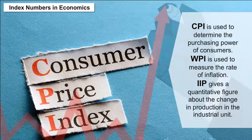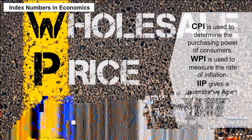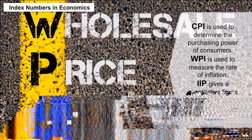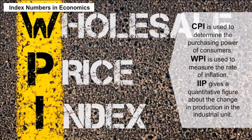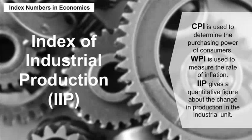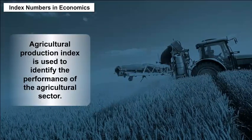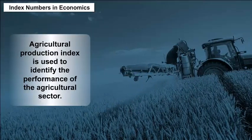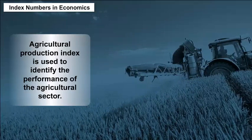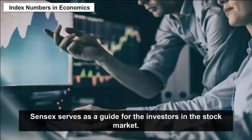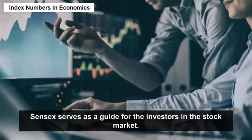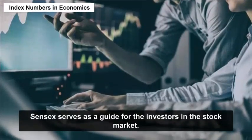Index numbers are a useful way of demonstrating data easily, and they make comparisons easier. The base value always has an index number of 100. CPI is used to determine the purchasing power of consumers. WPI is used to measure the rate of inflation. IIP gives a quantitative figure about the change in production in industrial units. Agricultural Production Index is used to identify the performance of the agricultural sector, and Sensex serves as a guide for investors in the stock market.